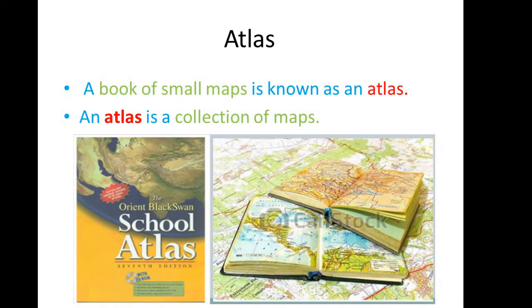Let's see what is an atlas. An atlas is a book of small maps. An atlas is a collection of maps. You can see the picture of an atlas. This is showing parts of India and this is showing in India, and other types of atlases are also showing other types of places. If you go to school, you will see one atlas at school. It is a book of small maps.